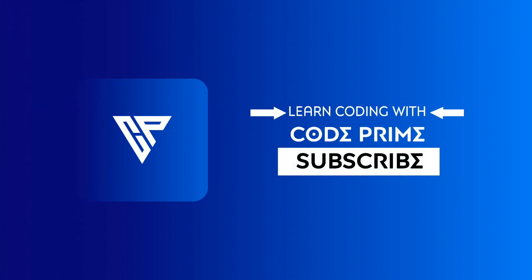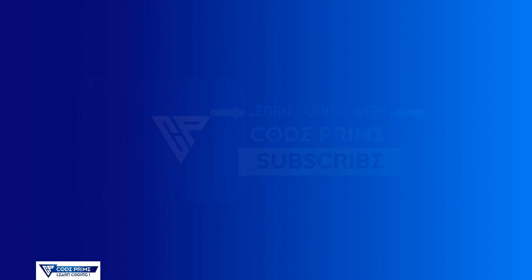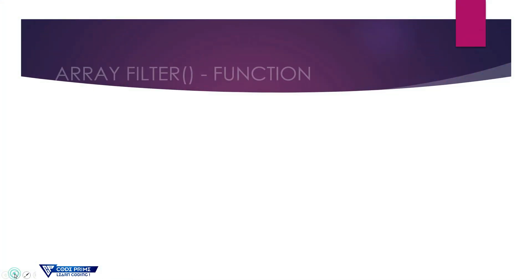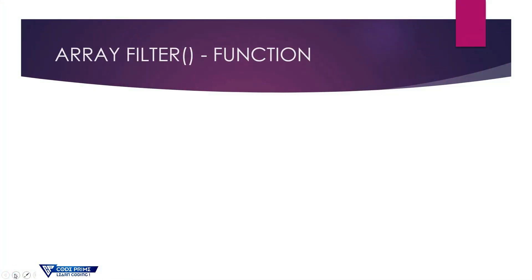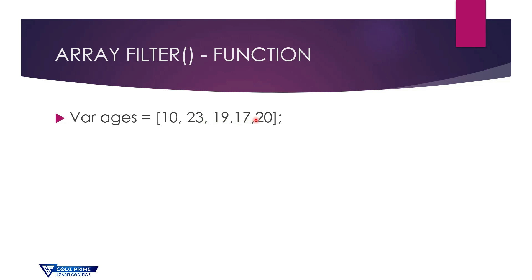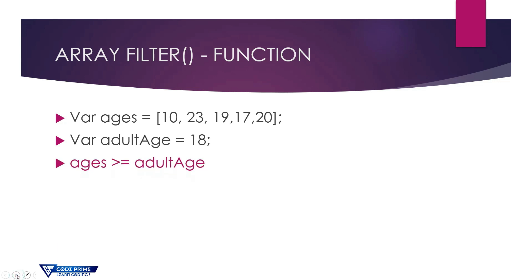Let's try to understand what the JavaScript filter array method is. For the filter function, first I'm going to take an array which has a variable called ages. We have elements like 10, 23, 19, 17, and 20. I'm going to take another variable called adultAge, which means equal to or more than 18 — that is the adult category.